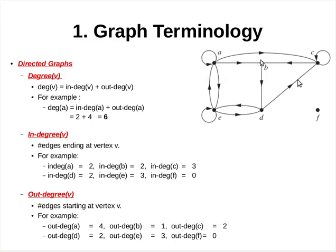Similarly, the in-degree of vertex B is equal to 2, which represents the directed edge from A to B as well as the directed edge from C to B. Both these edges are ending at vertex B. Now, the out-degree of a vertex V is the number of edges starting at vertex V.